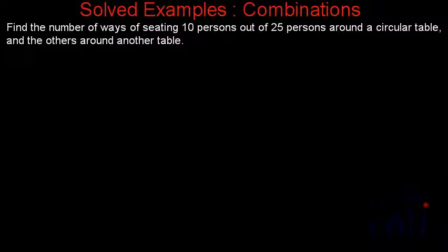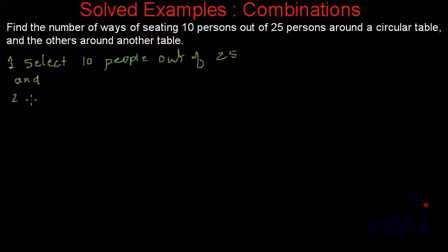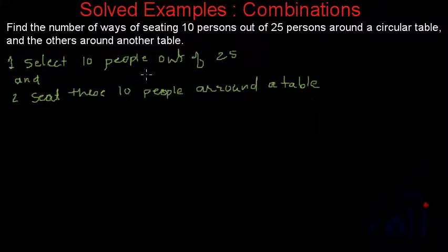So what do we have to do? First, we have to select 10 people out of 25, and second, seat these 10 people around a table. It's a round table, right?